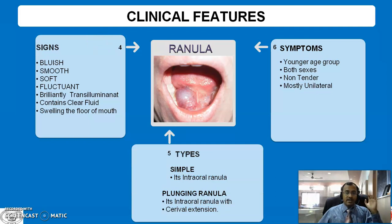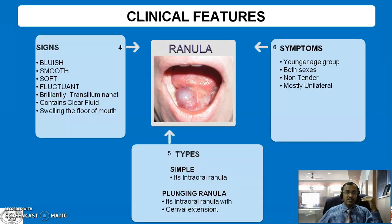There are two types of Ranula: a simple ranula, which has an intraoral location, and a plunging ranula, which has an extension to the cervical region.